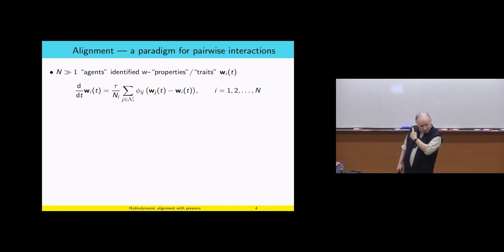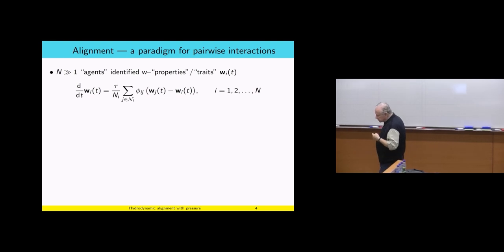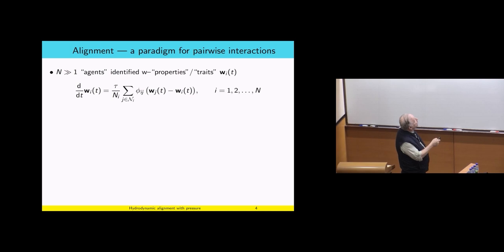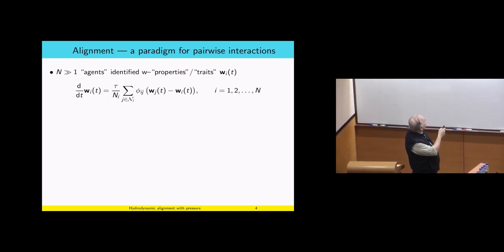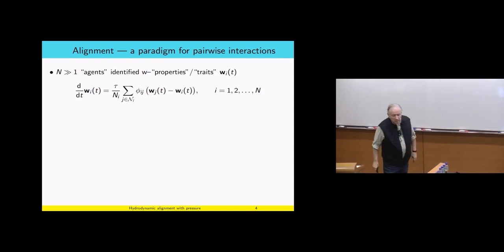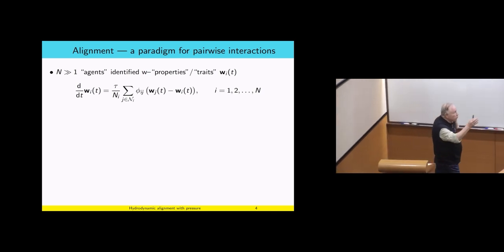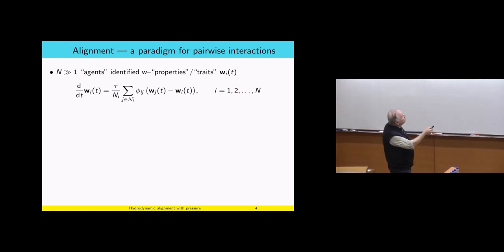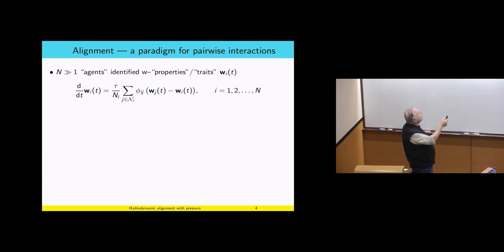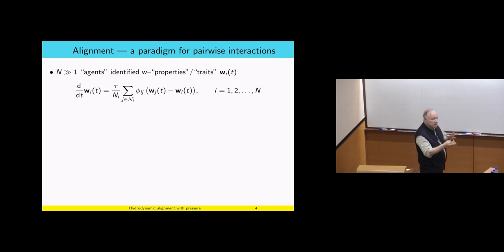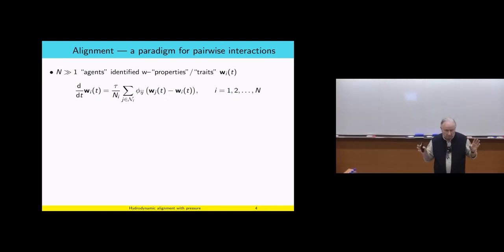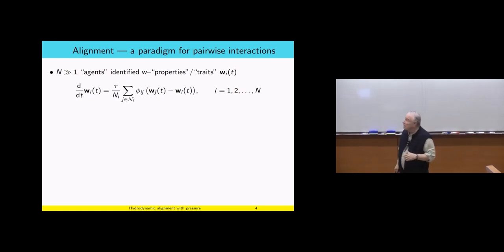We know that this hydrodynamic description is in fact the large-crowd description for an agent-based model, which is a paradigm for pairwise interactions. We have agents identified with properties, and in the typical case those properties were the velocities. Alignment applies to a much wider range of phenomena. We will denote not by V but by W the properties or traits of these agents, and the change in time of these properties is a weighted balance between my property and the property of my neighbor, weighted by phi_ij — symmetric weights which depend on positions or the properties themselves.